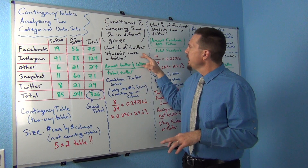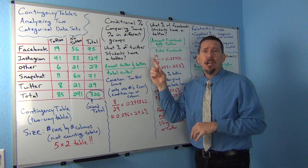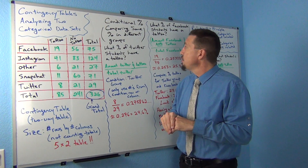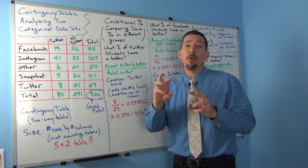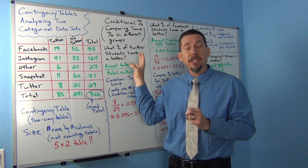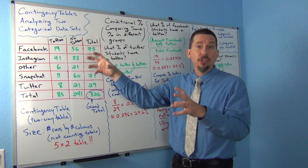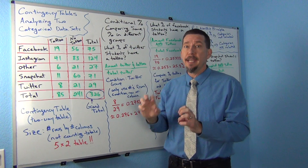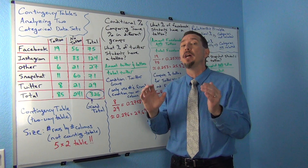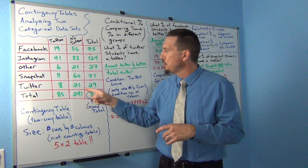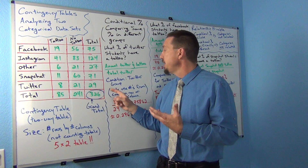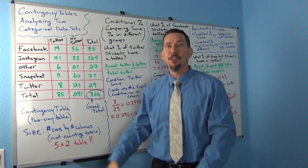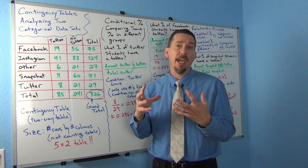Let's take a look at this first example: what percentage of Twitter students have a tattoo? The word 'of' or 'out of' tells you the total. In the last percentages, it always said 'of all the students,' meaning we use the grand total. But here it says 'of the Twitter students,' telling us something very specific — we only look at the Twitter group. That group is what we call the condition.